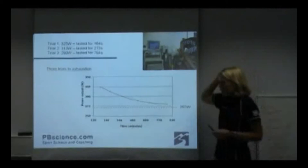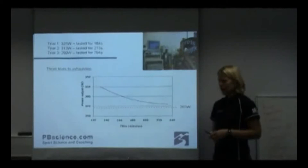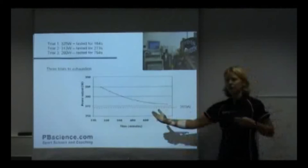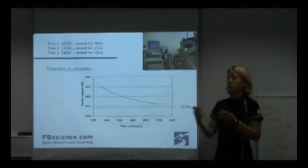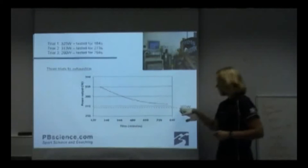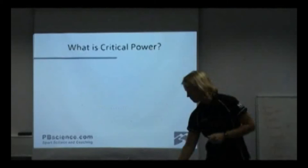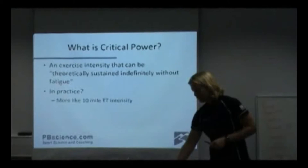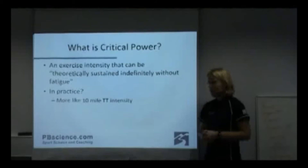You might come across a slightly different use of the phrase critical power. It's unfortunate that people have confused the terminology. The real critical power is this prediction of an intensity that you can go at, in theory, indefinitely. You might see a 'three-minute critical power' or a 'critical power for seven minutes' — that doesn't make sense; that's actually just the maximum power you can hold for that period of time. What we're predicting is one value — each athlete would have one value — meant to be the intensity you can sustain indefinitely without fatigue. But in practice, the research we've done here shows that's not necessarily true.